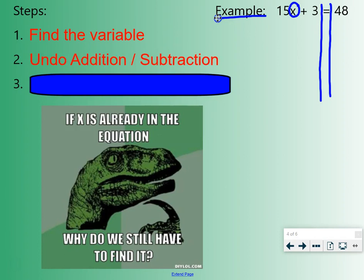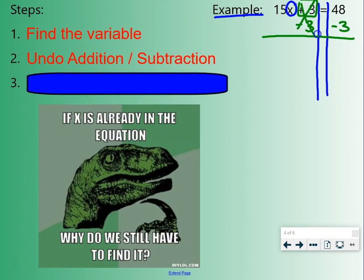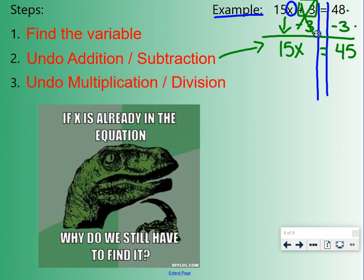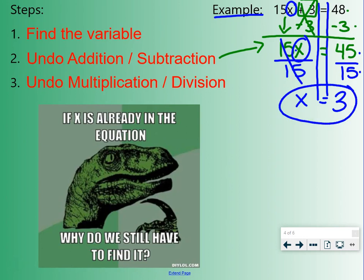Our second step is to undo addition and subtraction. So we want to find the addition and subtraction in the problem, which right here is plus 3. We want to undo that first. So the opposite of plus 3 is minus 3. So we're going to do minus 3 on both sides. The 3's cancel out over here, which leaves us with our 15x equals 48 minus 3 is 45. Then, our third step is undo multiplication and division. So we find the multiplication or division, which is right here. 15x means 15 times x. To undo that, we have to divide both sides by 15. The 15's cancel out. We are left with just the x there. Equals 45 divided by 15 is 3. So x equals 3.